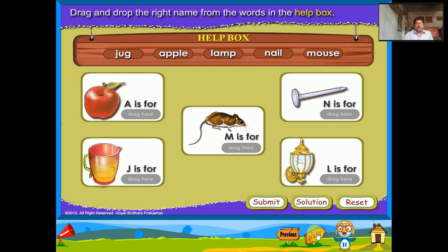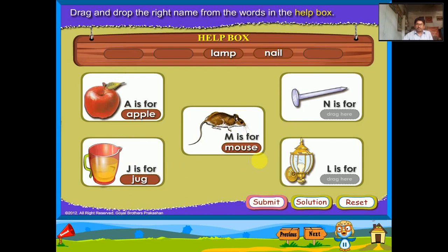Drag and drop the right name from the words in the help box. A is for a pal. J is for a junk. M is for a mouse. N is for a nail. L is for a lamb.